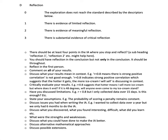The next criterion is Reflection — this is criterion D, with levels D1, D2, and D3. There is evidence of limited reflection, meaningful reflection, and substantial evidence of critical reflection. Of all the criteria, this one is the easiest to get full marks in because you just need lots of reflection and it needs to be critical.